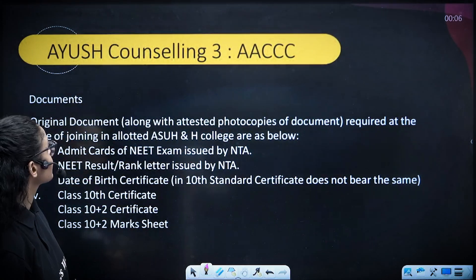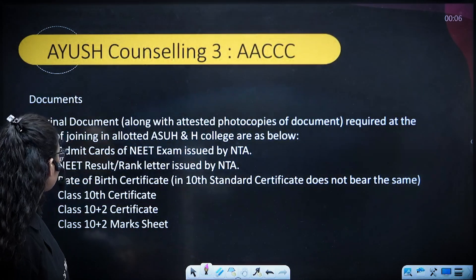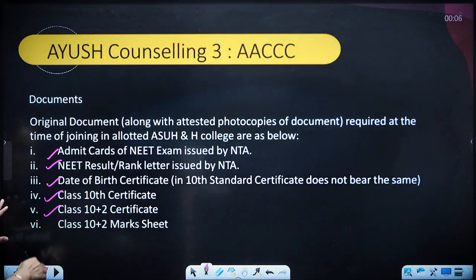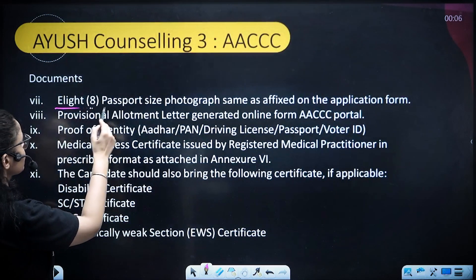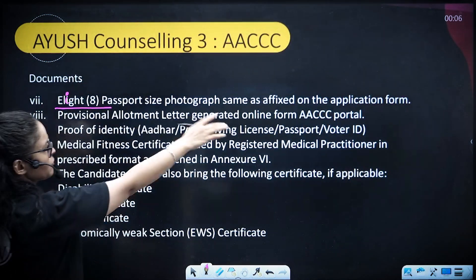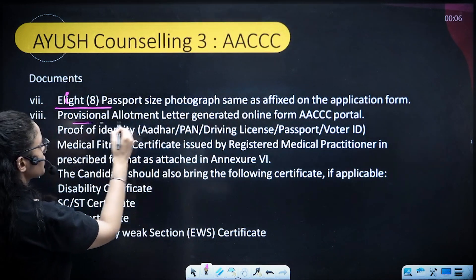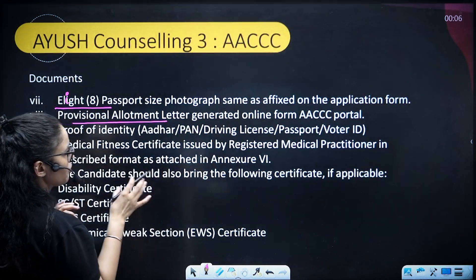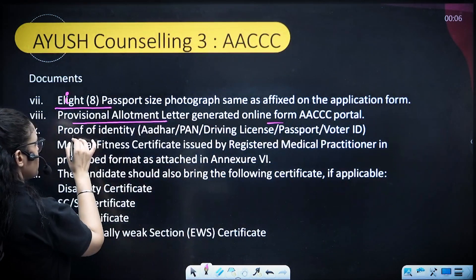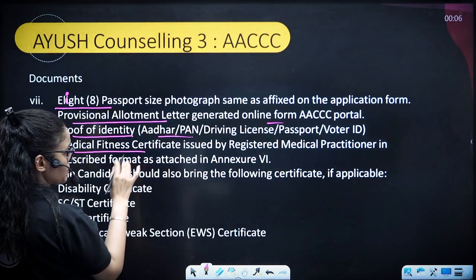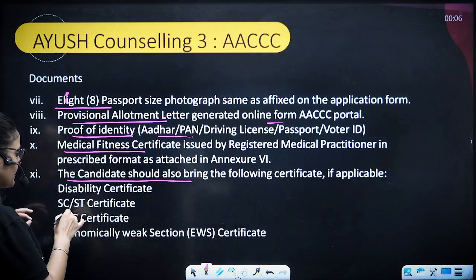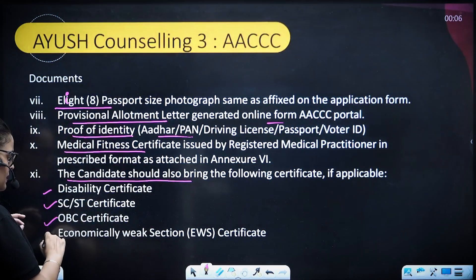For the counseling reporting step, required documents include: NEET admit card, NEET result, date of birth proof, 10th and 12th certificates, 11th mark sheet, eight passport-size photographs matching the application form, provisional allotment letter generated from the AACCC online portal, proof of identity, and a medical fitness certificate. Candidates must also bring applicable category certificates: disability, SC/ST, OBC, and EWS certificates.